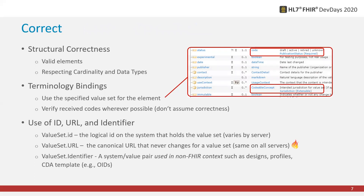We're going to start with correctness. Structural correctness may seem self-evident, but it is foundational to interoperability and so it's worth mentioning. Terminology bindings are also essential to semantic understanding of FHIR messages. While we know that the sending system should be making use of a proper FHIR terminology service, we also want to make sure that we verify those received codes and not just assume that they're correct, and also not just verify that our sent codes are correct.